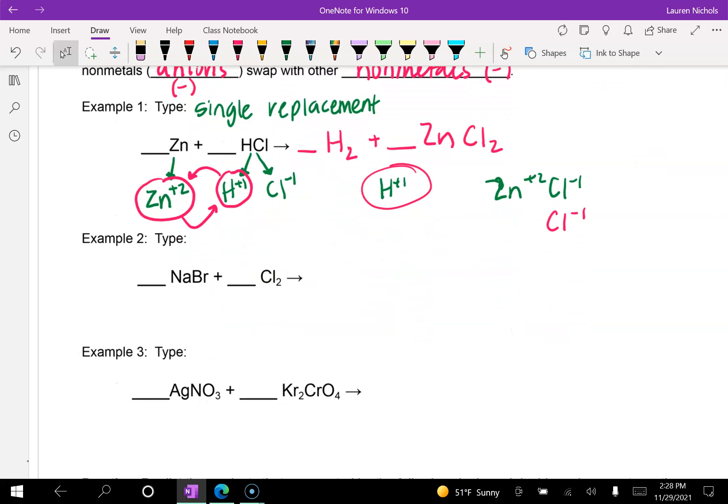For our second example, this is also going to be a single replacement reaction because chlorine is by itself. And so what we do is we, again, split it up. We have sodium and we have bromine. And then here we have chlorine. And we find their charges. So sodium has a positive one charge. Bromine and chlorine are both negative one.